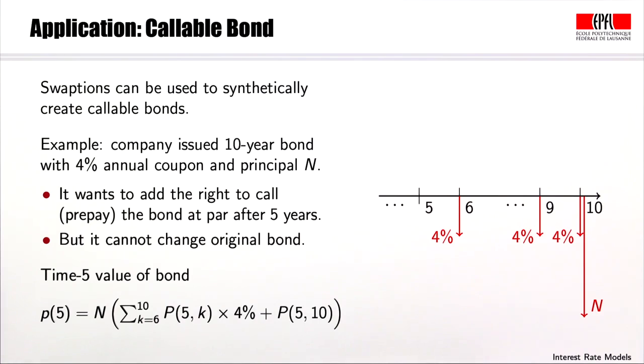Let's look at the situation the company faces after 5 years sitting at this time point. The company is facing cash flows, 4% annual coupons on the notional of N. The company wants to add the option to get rid of these payments of 4% annual coupons and instead pay the notional N at date 5.